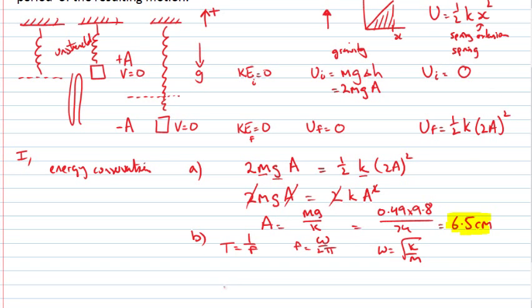Take these things and put them together to write that the period is going to be given by 2π over omega, which looks like 2π times the square root of m over k. So k over m is omega, so 1 over omega is m over k in the square root sign.